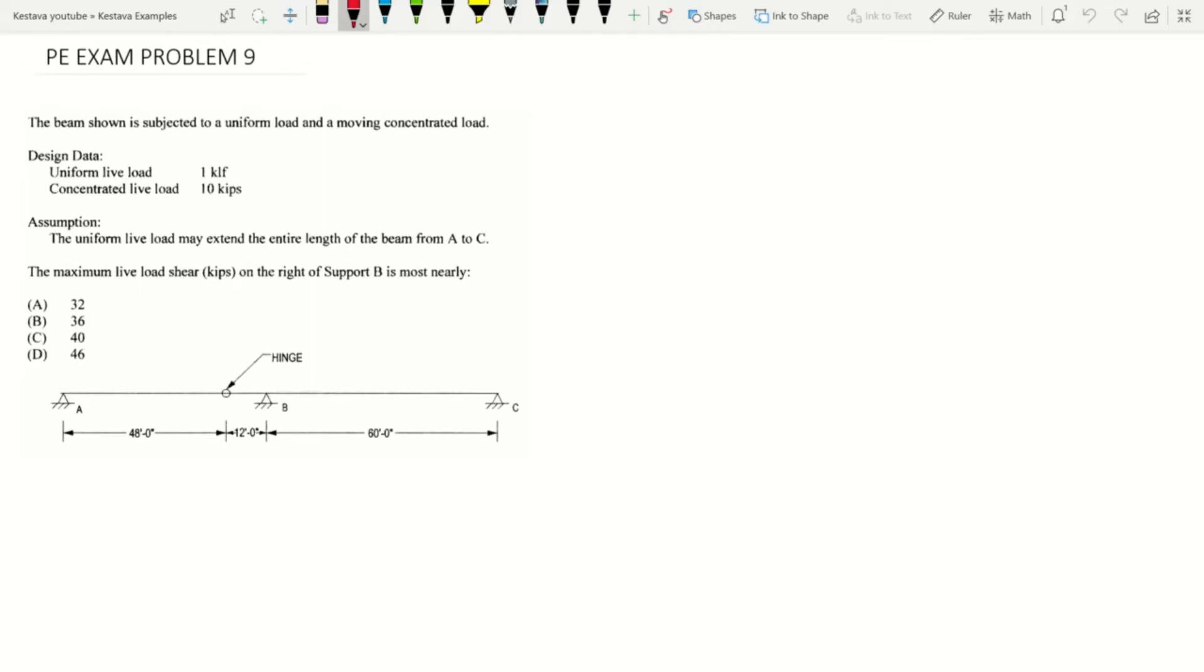Okay, let's get going. The beam shown is subjected to a uniform load and a moving concentrated load, and we're given design data. So the uniform load is 1 KLF kip per lineal foot and a concentrated live load of 10 kips.